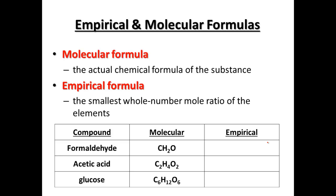Two terms we're going to be looking at are empirical formula and molecular formula. The molecular formula is the actual chemical formula of the substance, and the empirical formula is the smallest whole number ratio of each of the elements. We've got three chemicals here: formaldehyde CH2O, acetic acid — the active ingredient in vinegar — C2H4O2, and glucose, one of our simple sugars, C6H12O6.